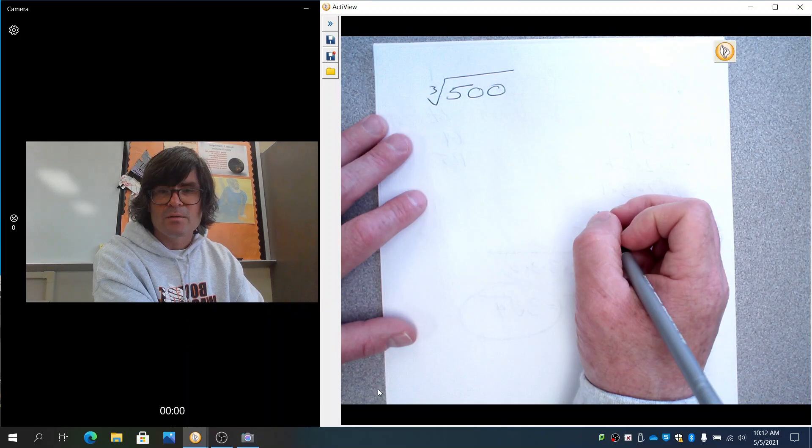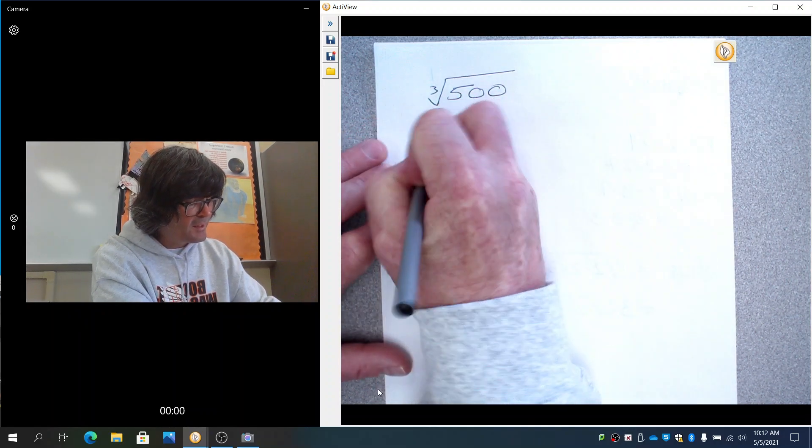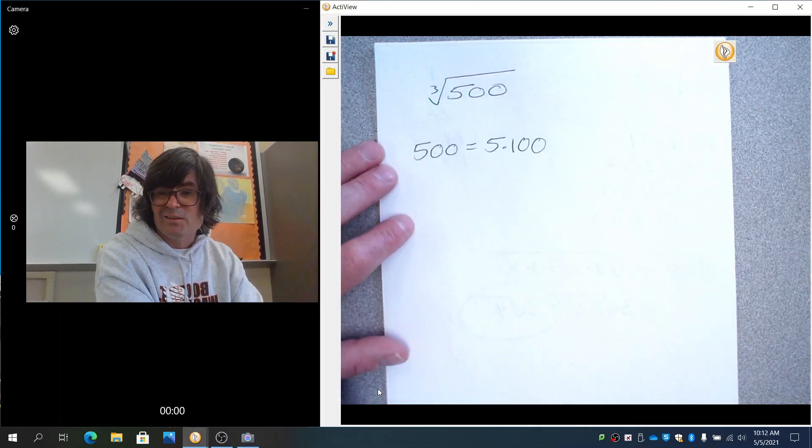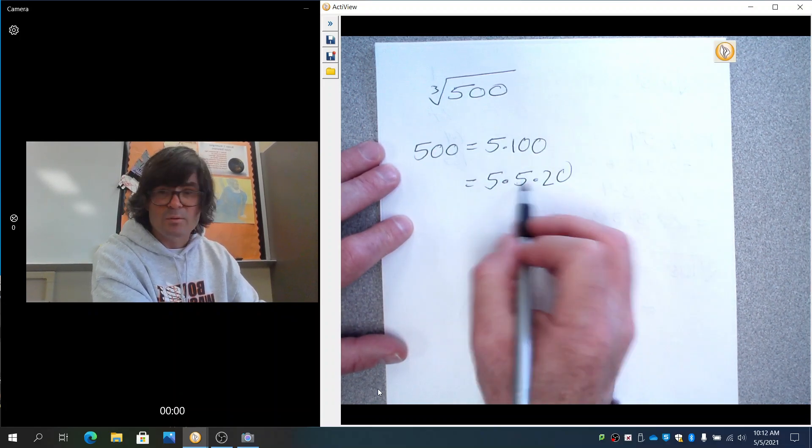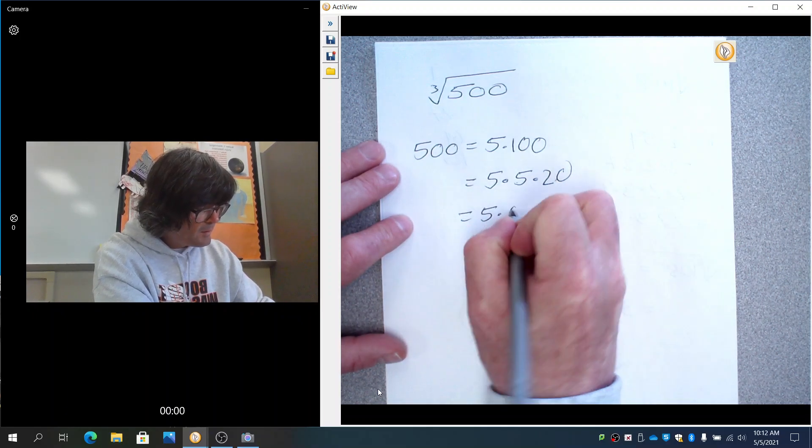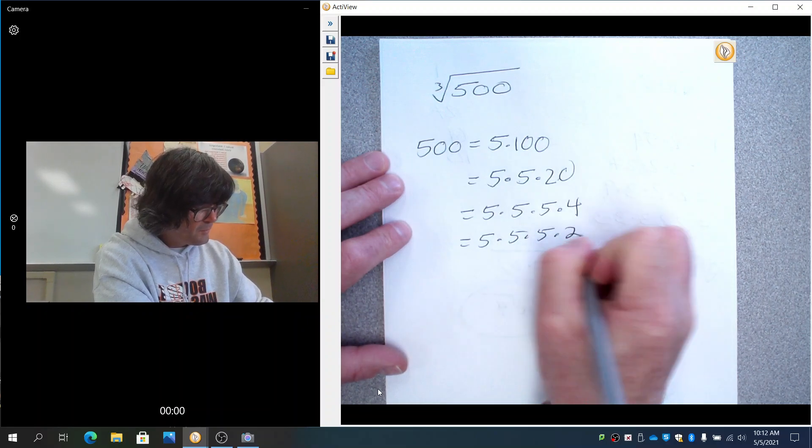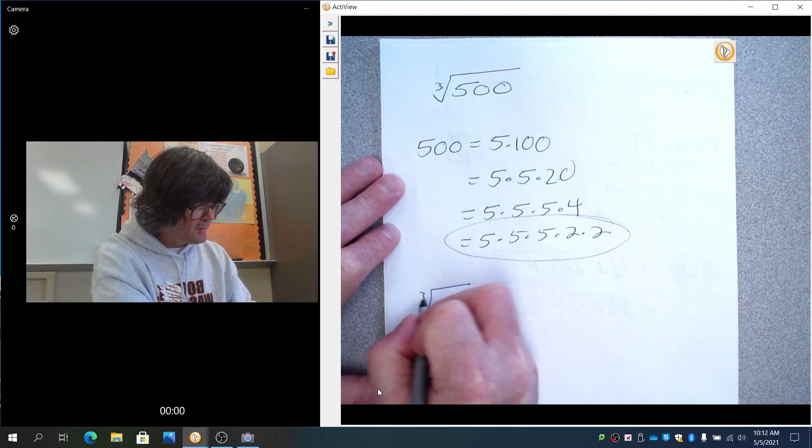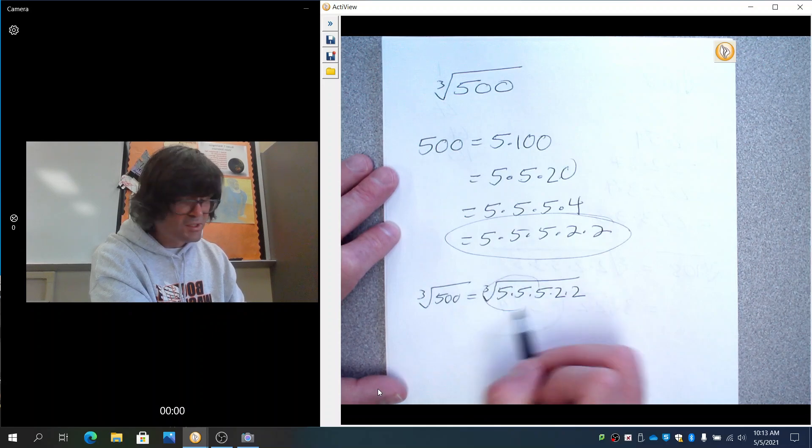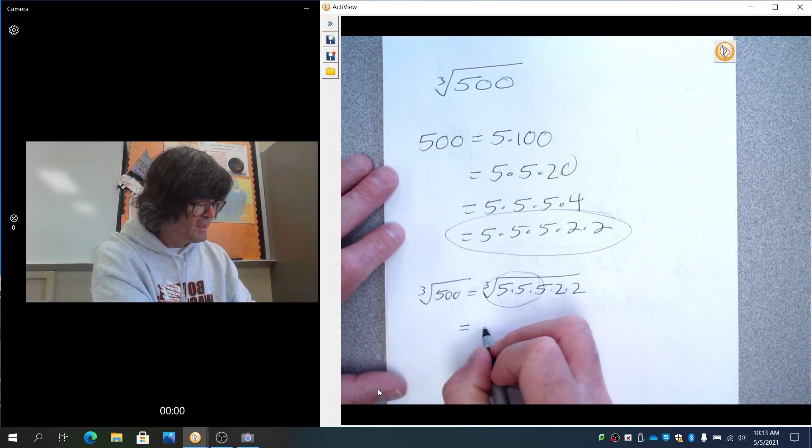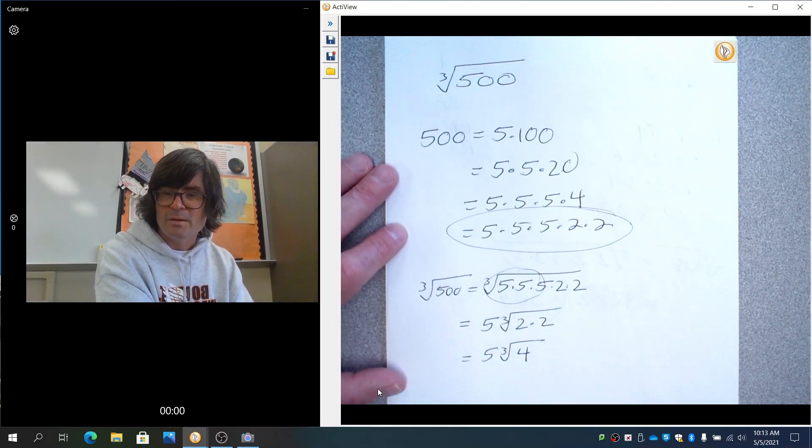Let's try one more like that: cube root of 500. I'm guessing 500 can be written as 5 times 100. Then 100 can be written as 5 times 20. And 20 is 5 times 4. And 4 is 2 times 2. So this is the prime factorization: cube root of 5 times 5 times 5 times 2 times 2. Now I see there's 3 fives in there. The cube root of 5 times 5 times 5 is just 5. And then you get this left over, which is 5 cube roots of 4.